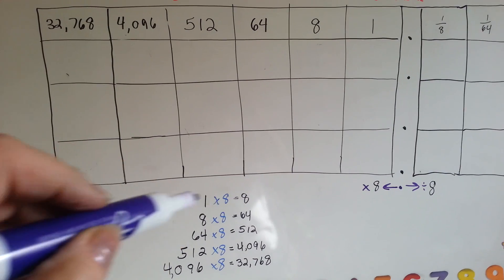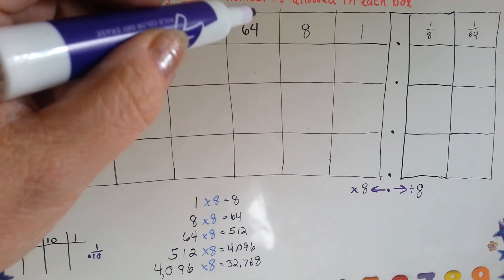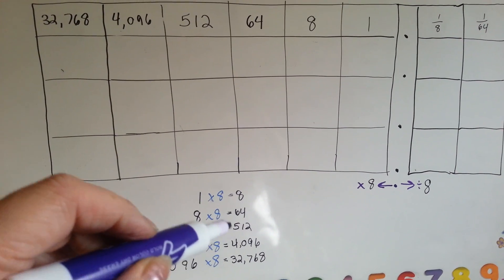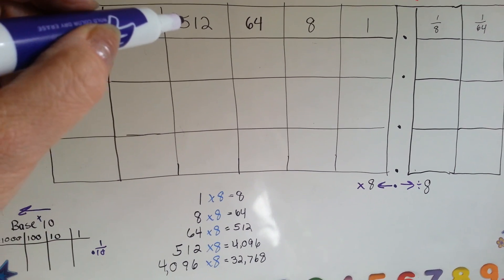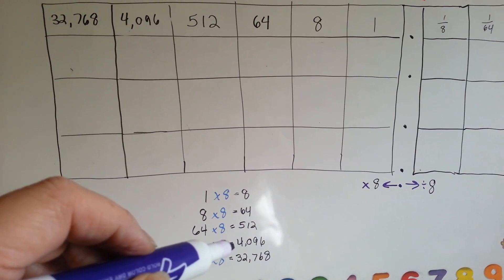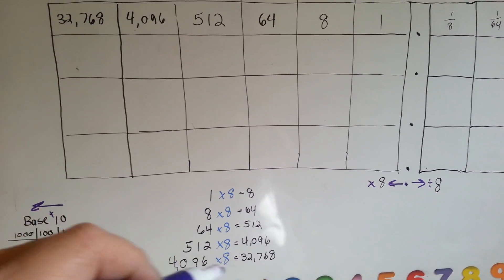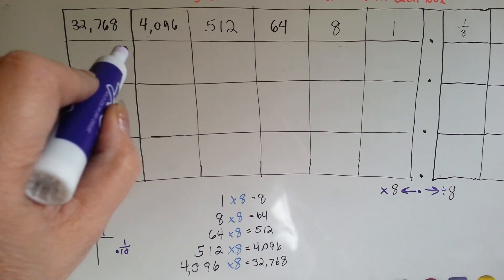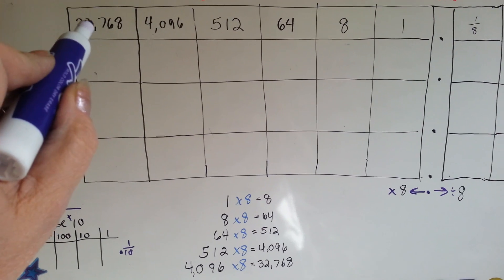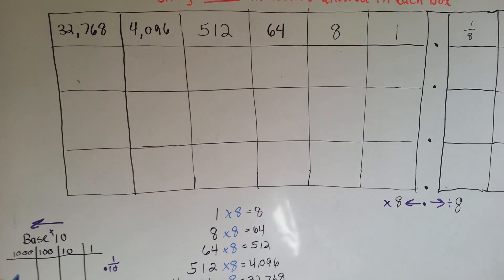One times eight is eight, eight times eight is sixty-four, sixty-four times eight is five hundred and twelve, five hundred and twelve times eight is four thousand ninety-six, and so on. We would just keep going this way, multiplying this number by eight.